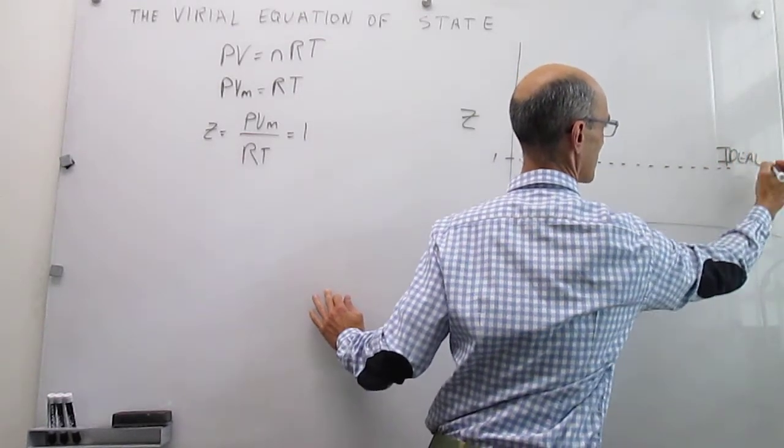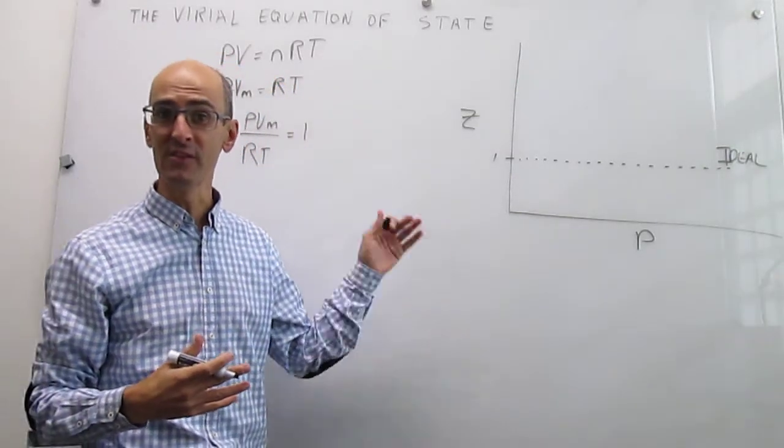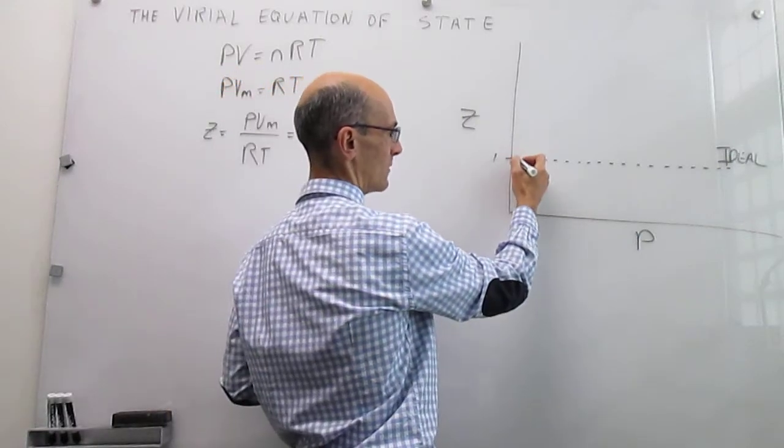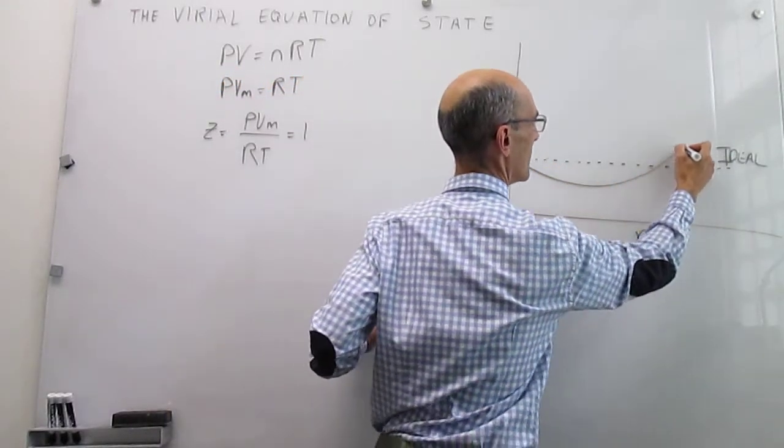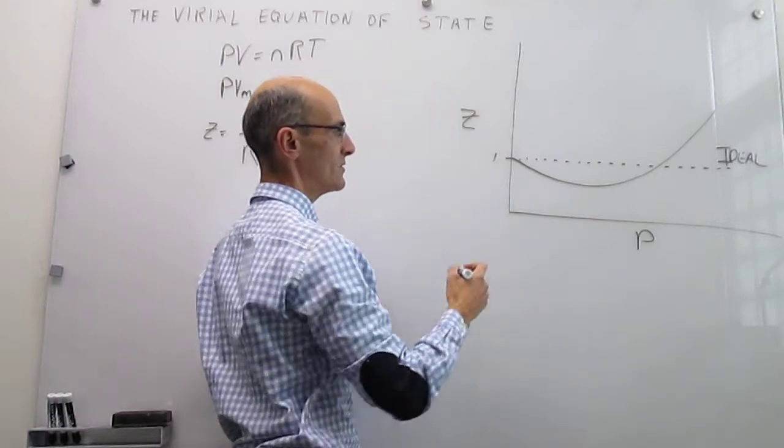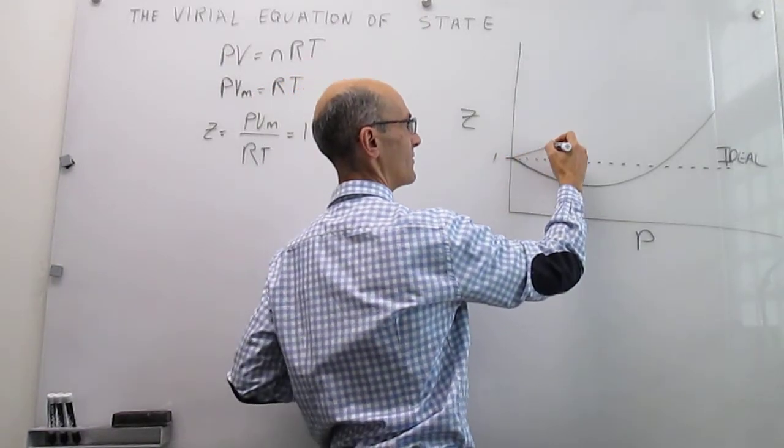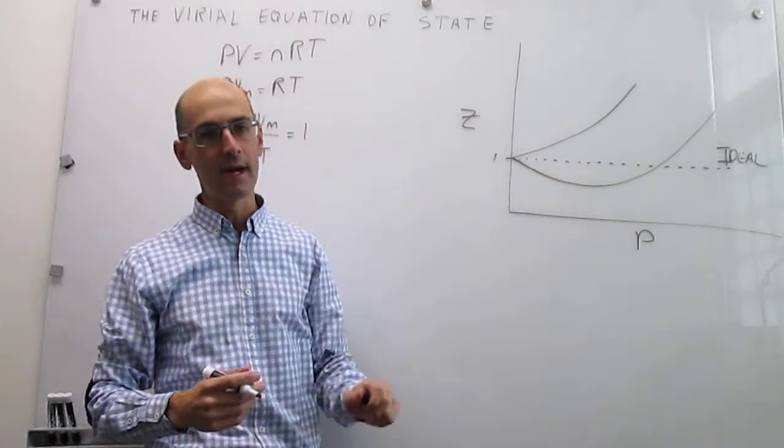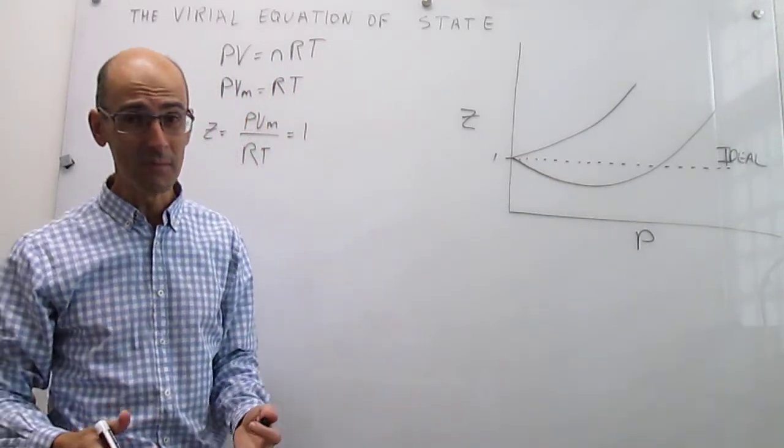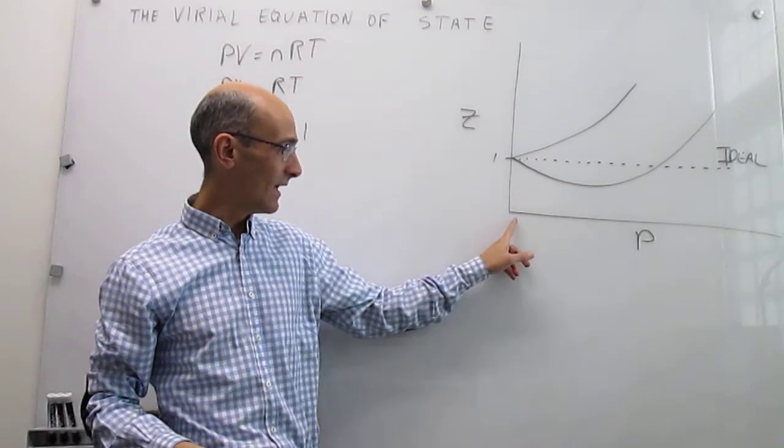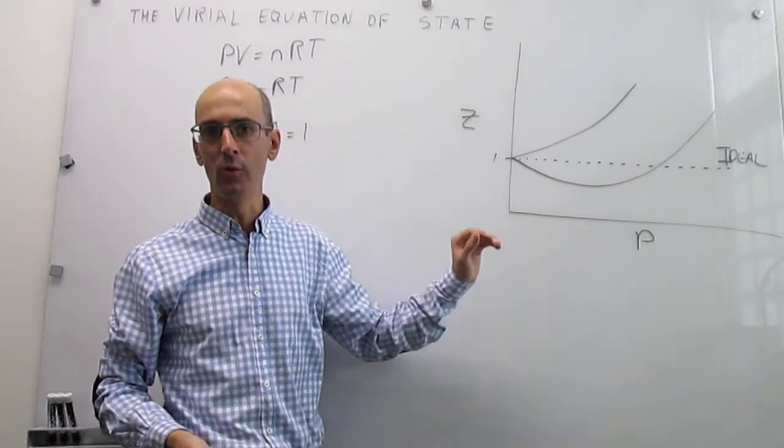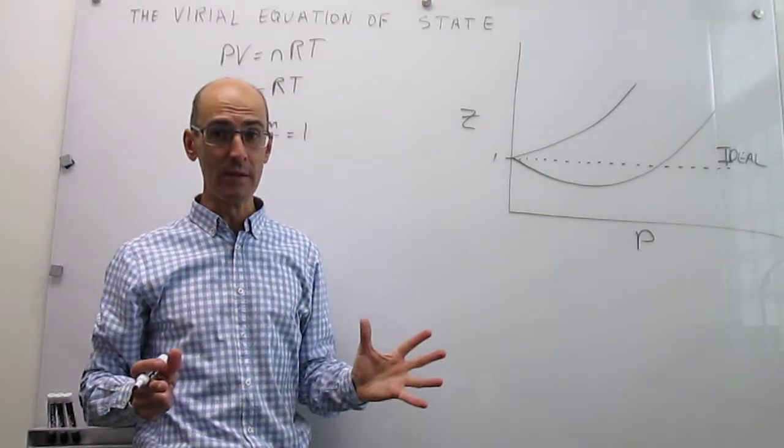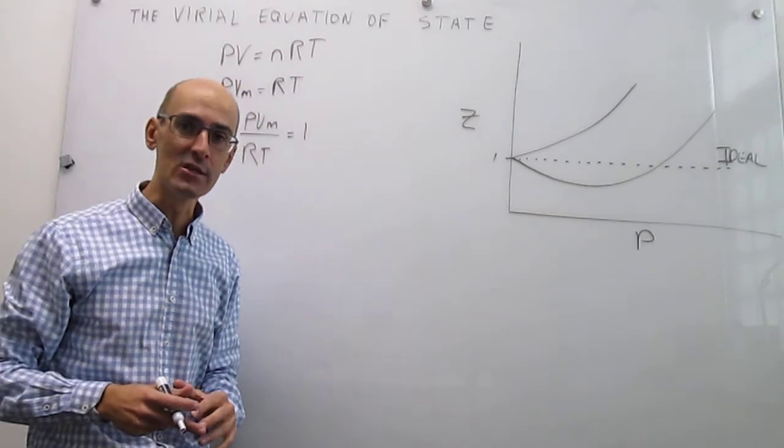But in reality what we actually tend to observe is variations from this straight line with zero slope. We sometimes observe this type of behavior generally at lower temperatures and sometimes we observe this type of behavior for other gases or perhaps for the same gas at a different temperature. Clearly gases do not behave ideally unless the pressure is quite low, close to ambient pressure or lower.